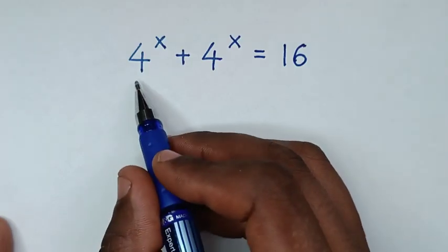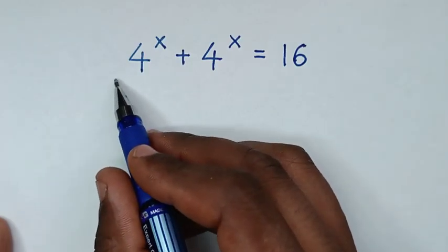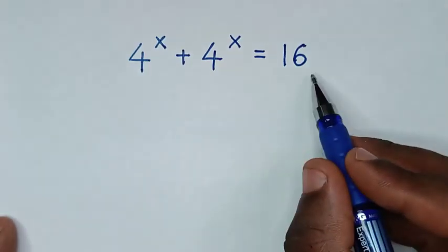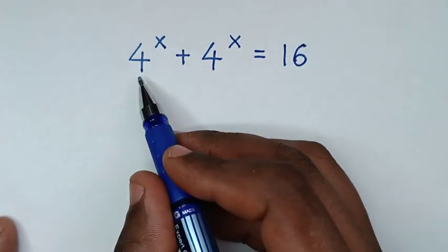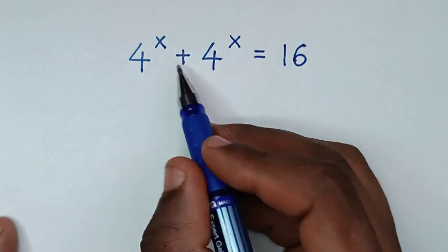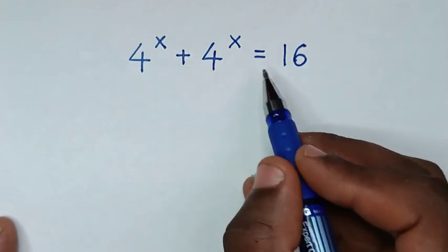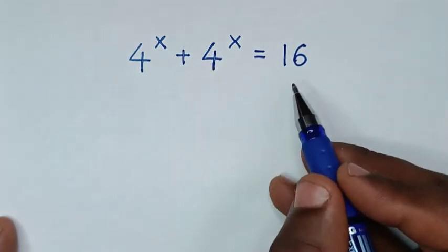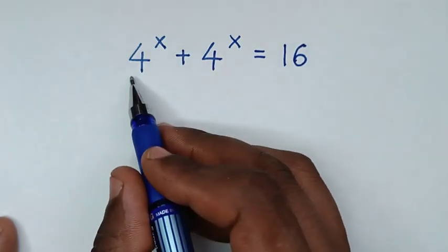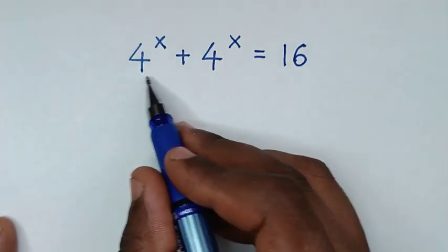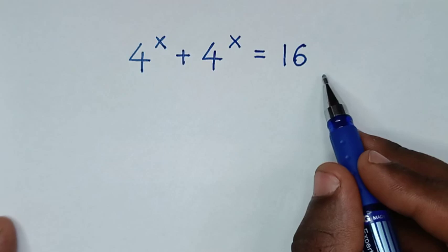Hello, you are welcome to solve this math problem, which is 4 power x plus 4 power x is equal to 16, to find the value of x from this equation.